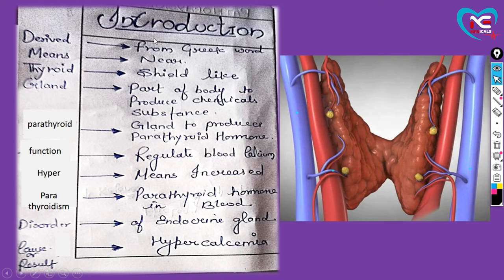Ab aajao introduction par. Woh tha normal function. Ab yeh jo humari disease hai, yeh ek Greek word se nikli hai. 'Parathyroid' jo humara word hai woh Greek word se nikla hai, uska meaning hota hai 'near' - kiske near? Parathyroid gland aapke thyroid gland ke near hai. Toh thyroid gland ek shield-like ya butterfly-like structure hai. Parathyroid jo hoti hai yeh khud ka apna hormone secrete karti hai jisko hum parathyroid hormone bol diye, jiska main function hai ki blood mein calcium level ko regulate karke rakhna.